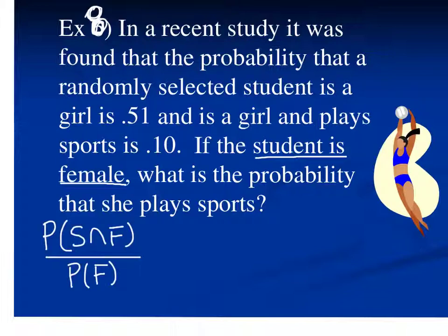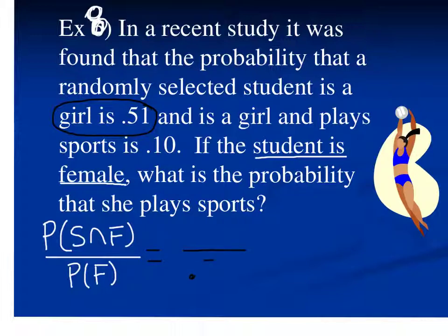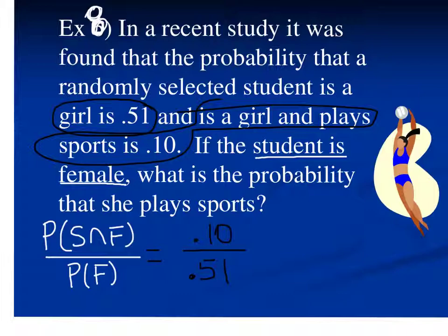I've written out my formula: the probability of sports and female, divided by the probability that the student is female. I'm given both pieces of information in the problem. The probability that the student is a girl is 0.51, so that goes into the denominator. The probability that a student is a girl and plays sports is 0.10, so that goes into the numerator. When I divide these two, I get a probability of 0.196.